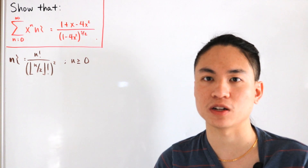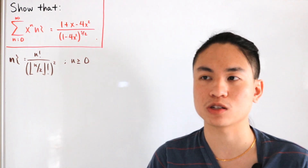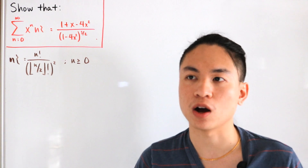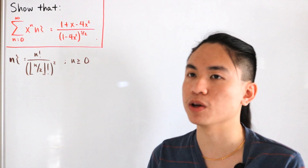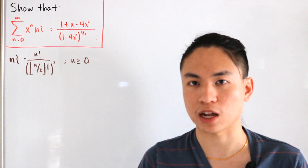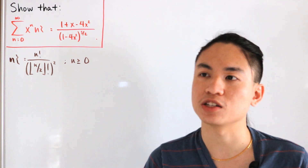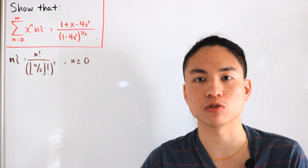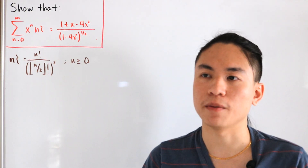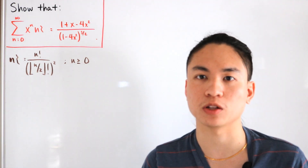To approach this, we'll use a very important formula involving the central binomial coefficient. The central binomial coefficient refers to the central term in the n-th row of Pascal's triangle. For example, n=0 gives 1, n=2 gives 2, n=3 gives 6, n=8 gives 20 — you look at the even rows and pick out the middle term.